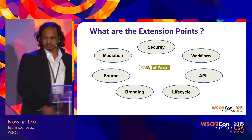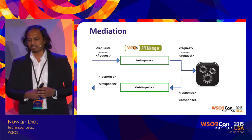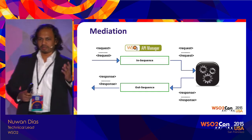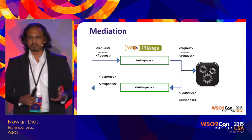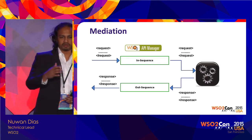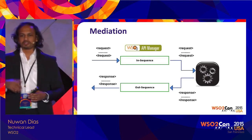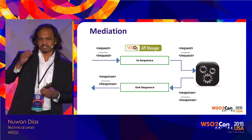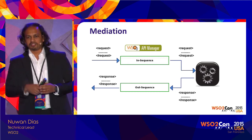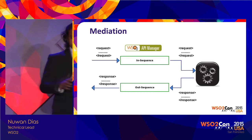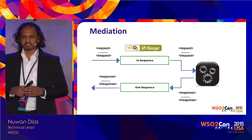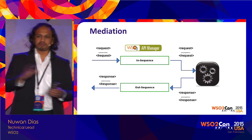Starting off, we'll look at message mediation policy extensions. When any request is received on an API at the Gateway, it is sent into a channel called the in-sequence. We call it an in-sequence because you can configure a sequence of actions to be performed on the message when it is inside this channel. The same applies for the response path, which goes through a channel called the out-sequence.